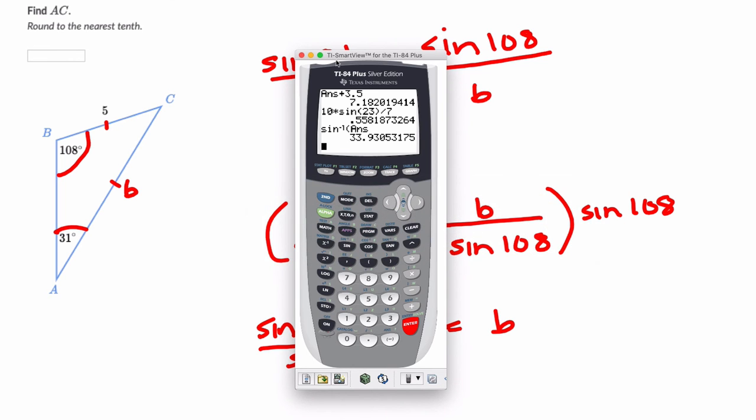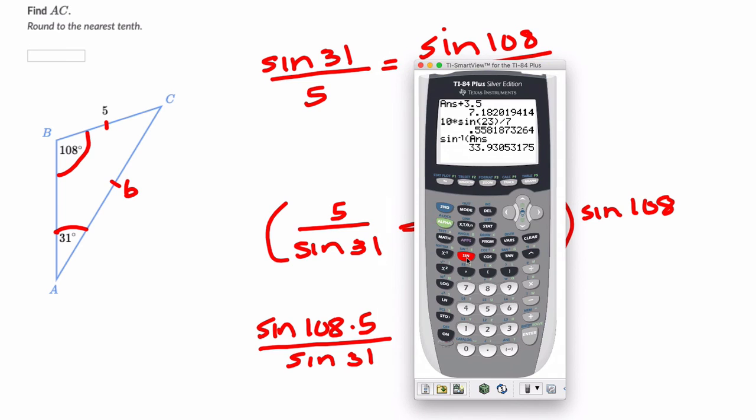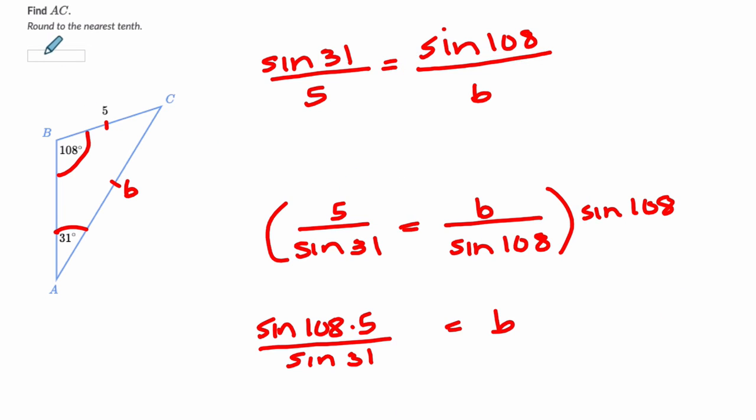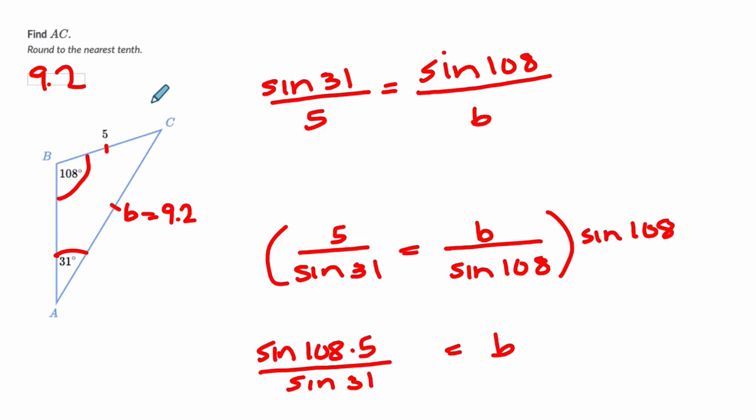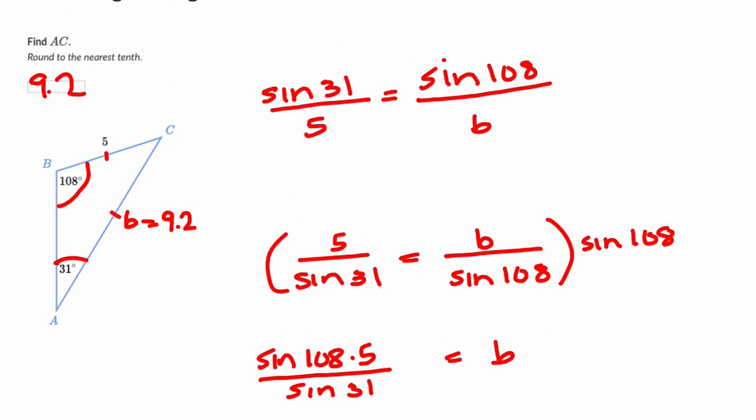So here I'm going to enter that in my calculator. The sine of 108 times 5, enter, and then divide it by the sine of 31. We get 9.23 to the nearest tenth is 9.2. So I'm going to put 9.2 right here. And that makes sense to me that b is about 9.2. It seems longer than this side here, which makes sense because it's across from a larger angle, and it seems reasonable. So I always check that. You want to make sure it seems reasonable.